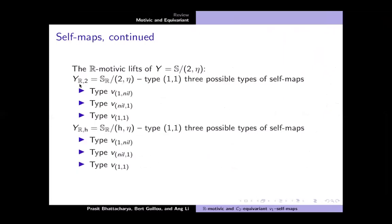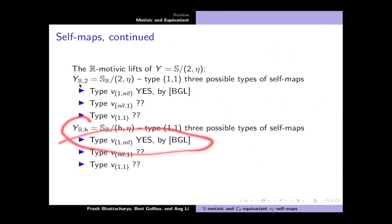What I want to focus on are the Y complexes. We have two motivic versions of Y: coning off two and eta, or coning off H and eta. Both are type (1,1) with three possible types of self-map depending on periodicity at the underlying and fixed-point levels. It turns out we do have a V1-nil self-map, and that's one of the main results in our paper — posted in August. Essentially the same argument works for both versions of Y, though the complete story is not yet known.